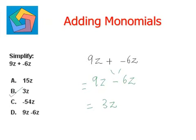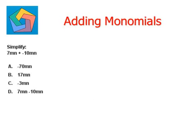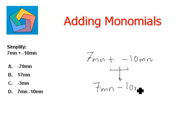Let's practice another example. Over here we have 7mn plus minus 10mn. Now both the terms are similar or they are like terms, so they can be added. The plus and the minus combine to become negative.